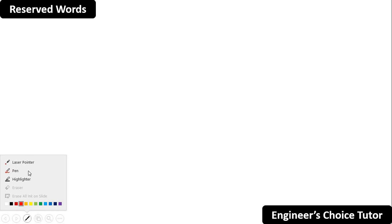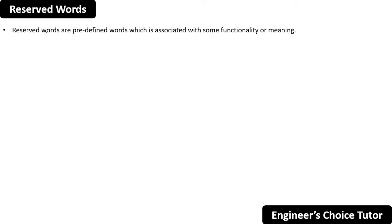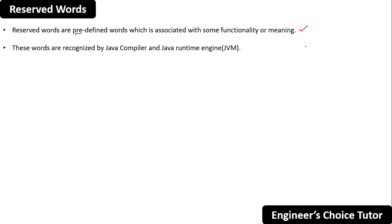In today's lecture we will see reserved words in Java. Reserved words are predefined words which are associated with some functionality or meaning. These reserved words are recognized by the Java compiler and the JVM, which is the Java Runtime Environment.